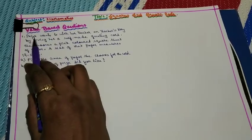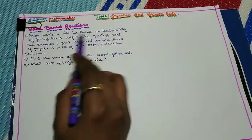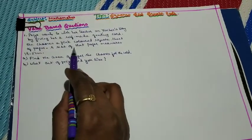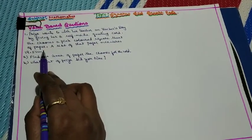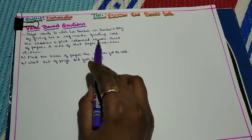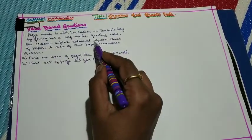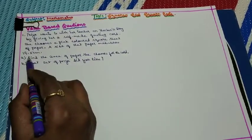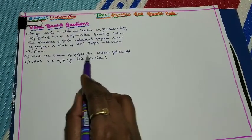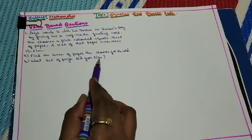The first question: Priya wants to wish a teacher on Teacher's Day by giving her a self-made greeting card. She chooses a pink colored square sheet of paper whose side measures 19.5 cm. Two sub-questions are asked. One: find the area of paper she chooses for the card. Two: what act of Priya did you like?